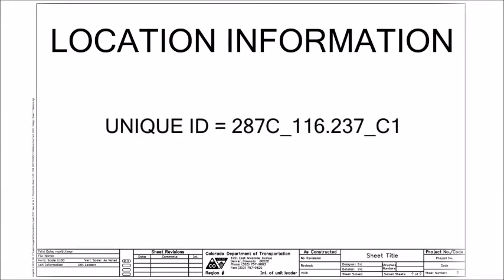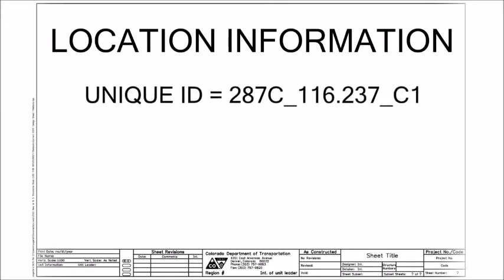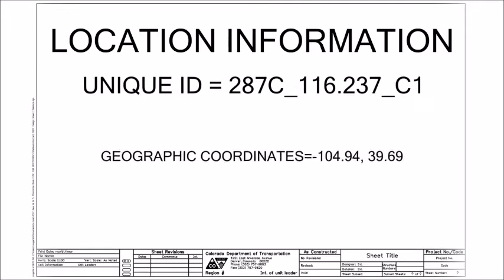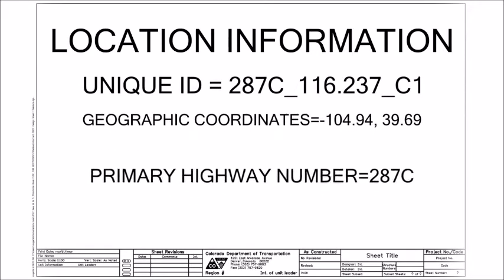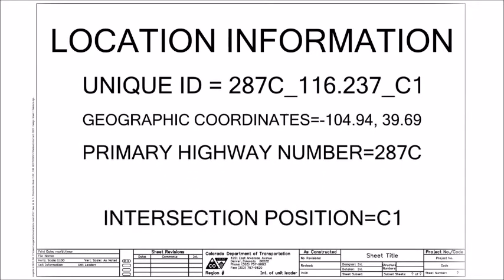Every curb ramp has specific location information associated with it, like a unique ID, geographic coordinates, their primary highway number, and the intersection position.